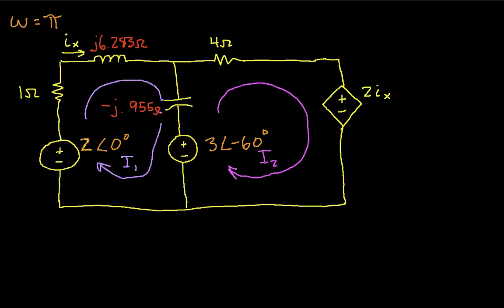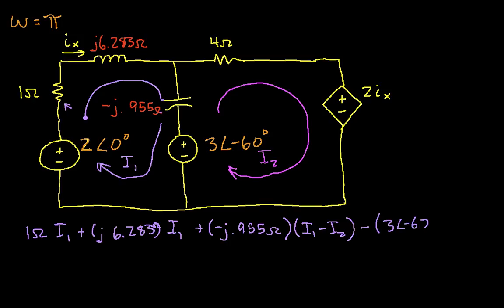So starting at the 1 ohm resistor here, applying Kirchhoff's voltage law around mesh 1, we get 1 ohm times I1 plus J 6.283 times I1 plus negative J 0.955 ohms times I1 minus I2 plus 3 at an angle of negative 60 minus 2 at an angle of zero degrees. And this is all equal to zero.